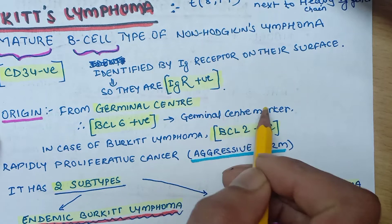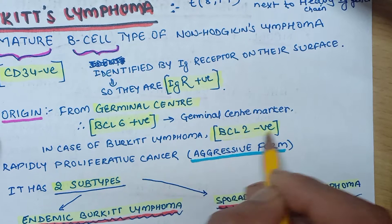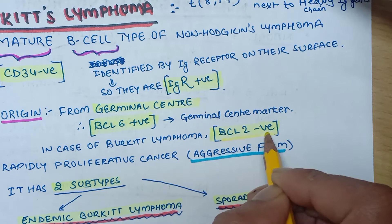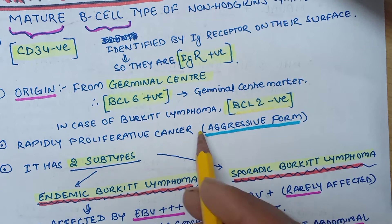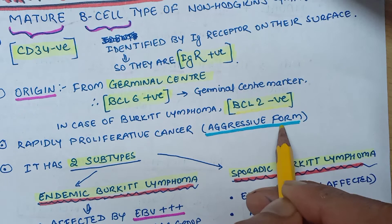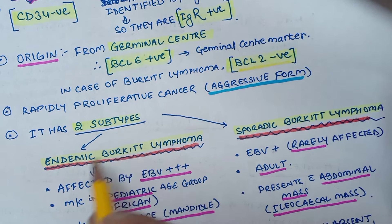Burkitt's lymphoma originates from the germinal center, so the marker BCL6 is positive — BCL6 is a germinal center marker. BCL2 will be negative in Burkitt's lymphoma. Burkitt's lymphoma is a rapidly proliferative cancer, giving it an aggressive form.